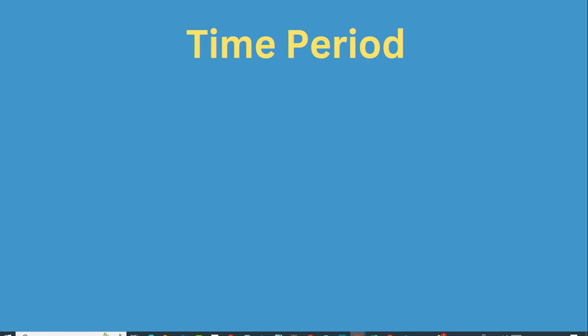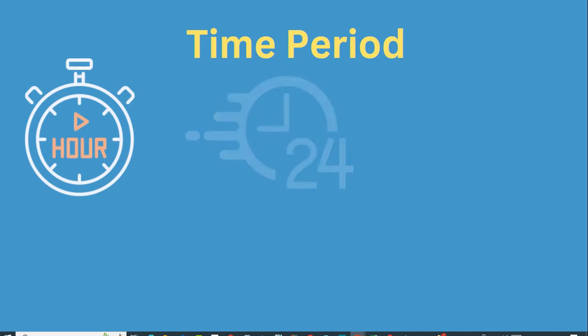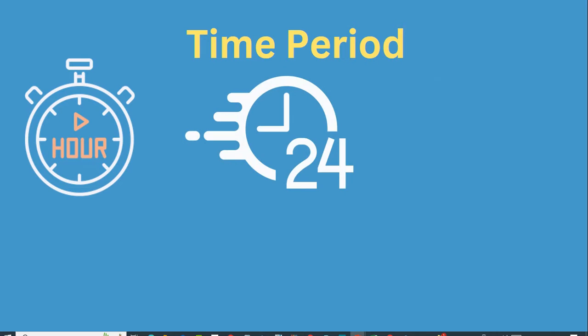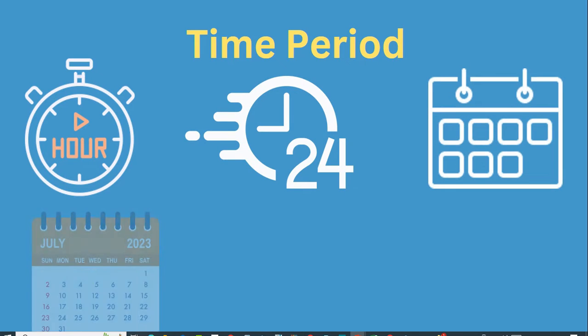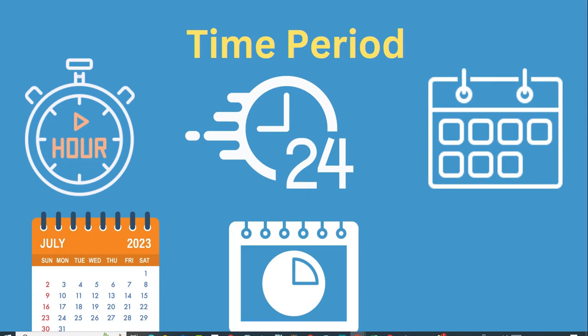What is a time period? A time period can be an hour, a day, a week, a month, a quarter, or one complete year.